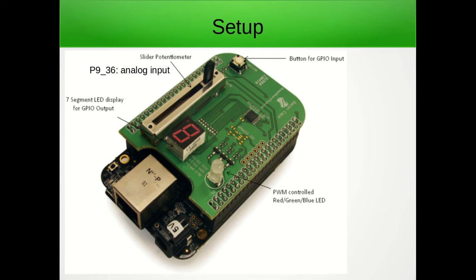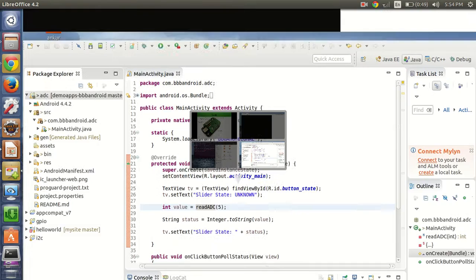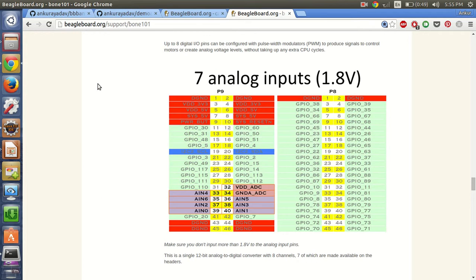For this demonstration I'll be using the setup from the previous video. I'll use the slider potentiometer available on the BeagleBone cape as the analog input, connected to the 36th pin of the P9 header. There are a total of seven analog inputs available on BeagleBone Black, and our potentiometer is attached to pin 36, which is analog input 5.